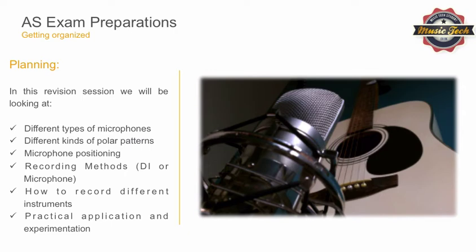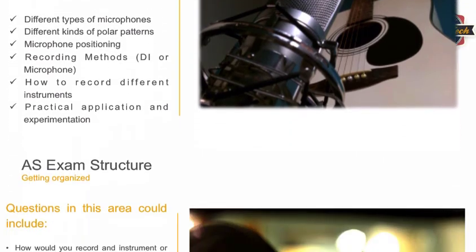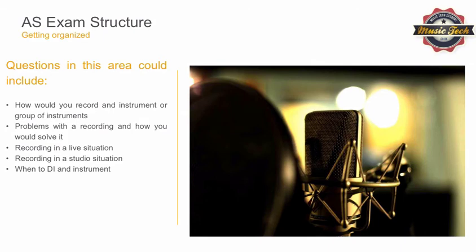We've also included some past questions and how much they're worth, to get you into the habit of answering them. You should definitely have a go at answering these questions, and also replace the keyword like grand piano with another instrument like saxophone, just so you get used to answering them for different instruments. The questions you could be asked throughout the exam in sections A and B could include: how would you record an instrument or group of instruments, problems with a recording and how you would solve them, recording in a live situation versus a studio situation, and when to DI an instrument versus when to use microphones.